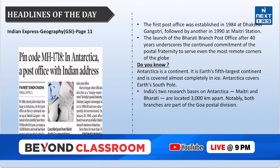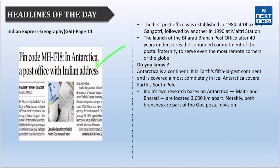Our next and last headline is related to Antarctica. Recently, the Chief Postmaster General of Maharashtra Circle inaugurated the Bharti branch post office in Antarctica with the new pin code MH1718. The first post office was established in 1984 at Dakshin Gangotri, followed by another in 1990 at Maitri station. Antarctica is Earth's fifth largest continent, covered almost completely in ice, and covers Earth's south pole. Today, India has two operational research stations in Antarctica: Maitri, commissioned in 1989, and Bharti, commissioned in 2012.